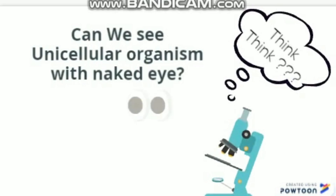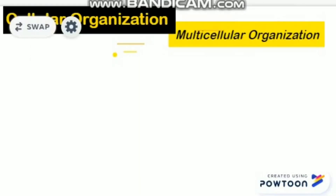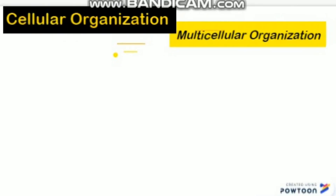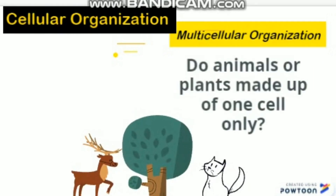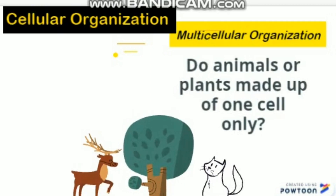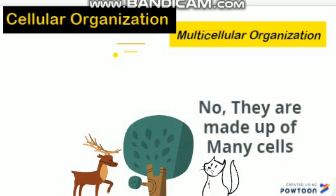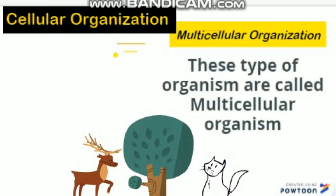Can we see a unicellular organism with the naked eye? The third type is multicellular organization. What is in the picture? They are animals and plants. Are they made up of only one cell? The answer is no — higher organisms are made up of many cells, and they are called multicellular organisms.